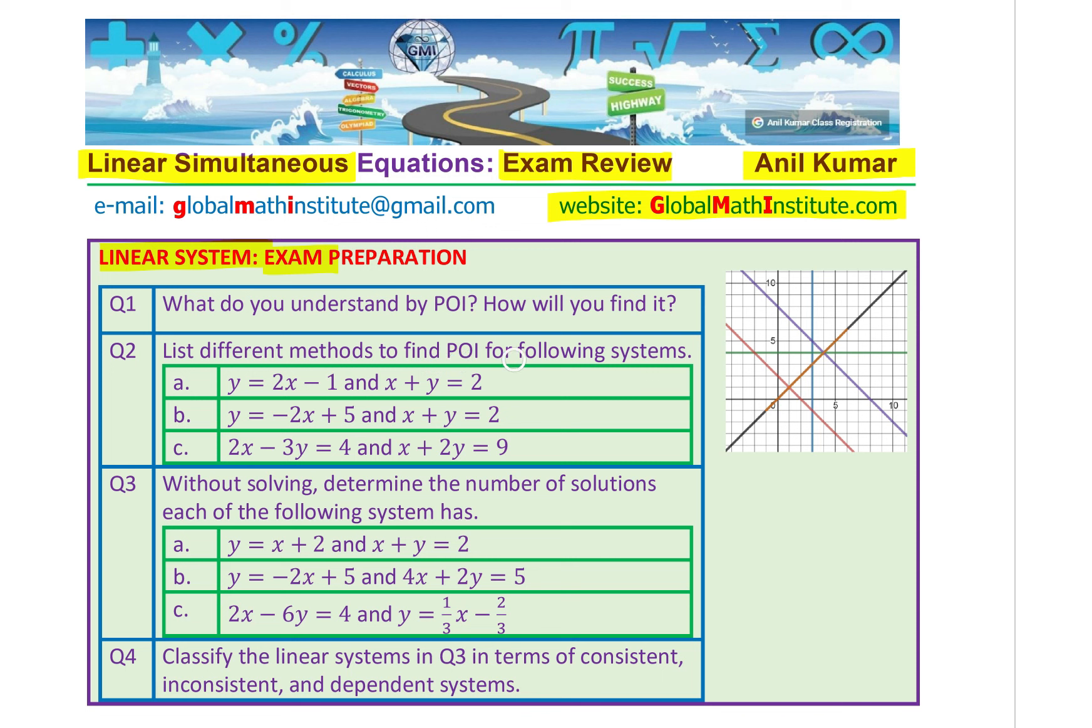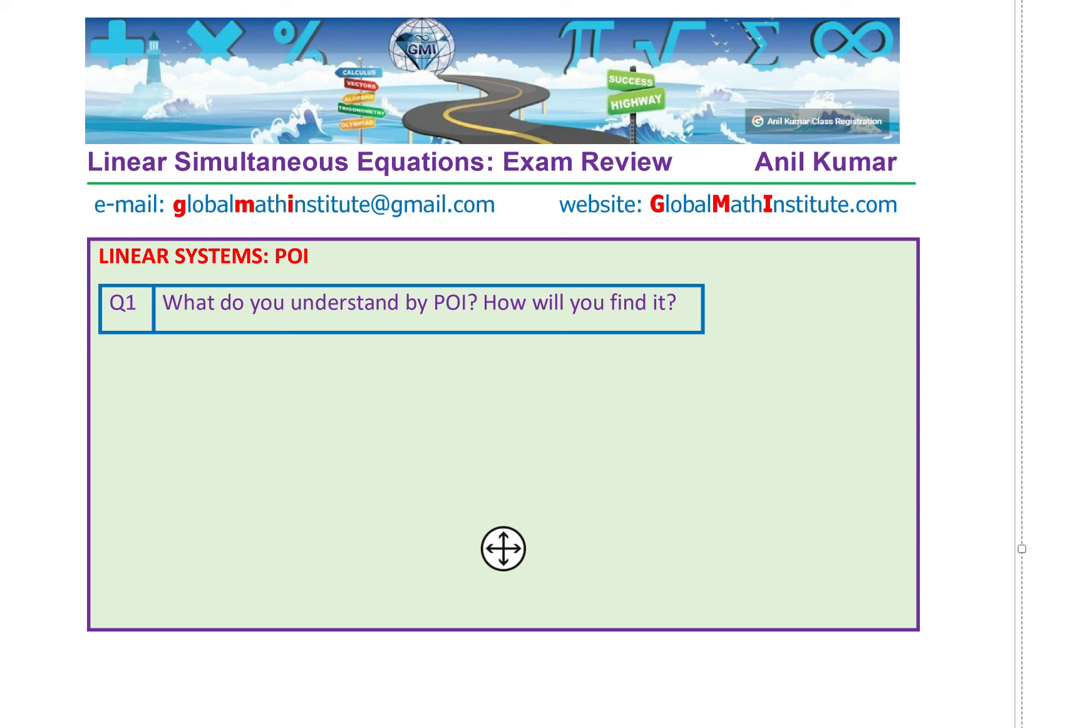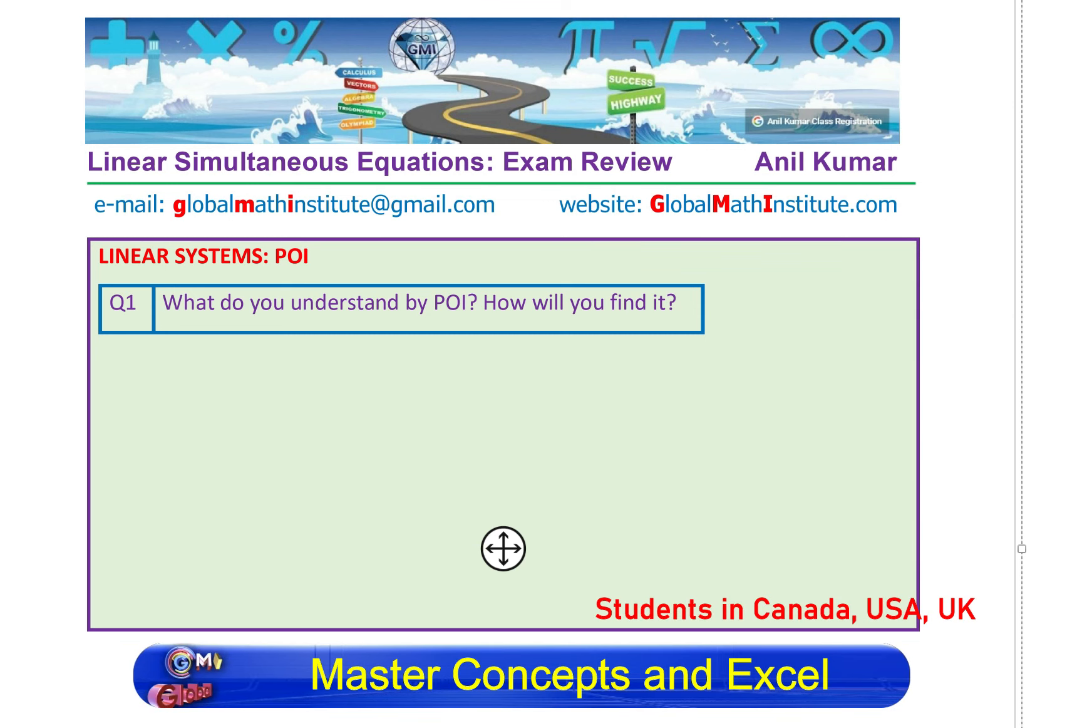Question number one: what do you understand by POI? How will you find it? Question number two: list different methods to find POI for following systems. Three different systems are given to you. Question three: without solving, determine the number of solutions each of the following system has. Question number four: classify the linear system in question three in terms of consistent, inconsistent and dependent systems. These are basic communication questions based on linear systems. We will try to understand how to answer them for getting full marks in communication. You can always pause the video, answer the question and then look into my suggestions.